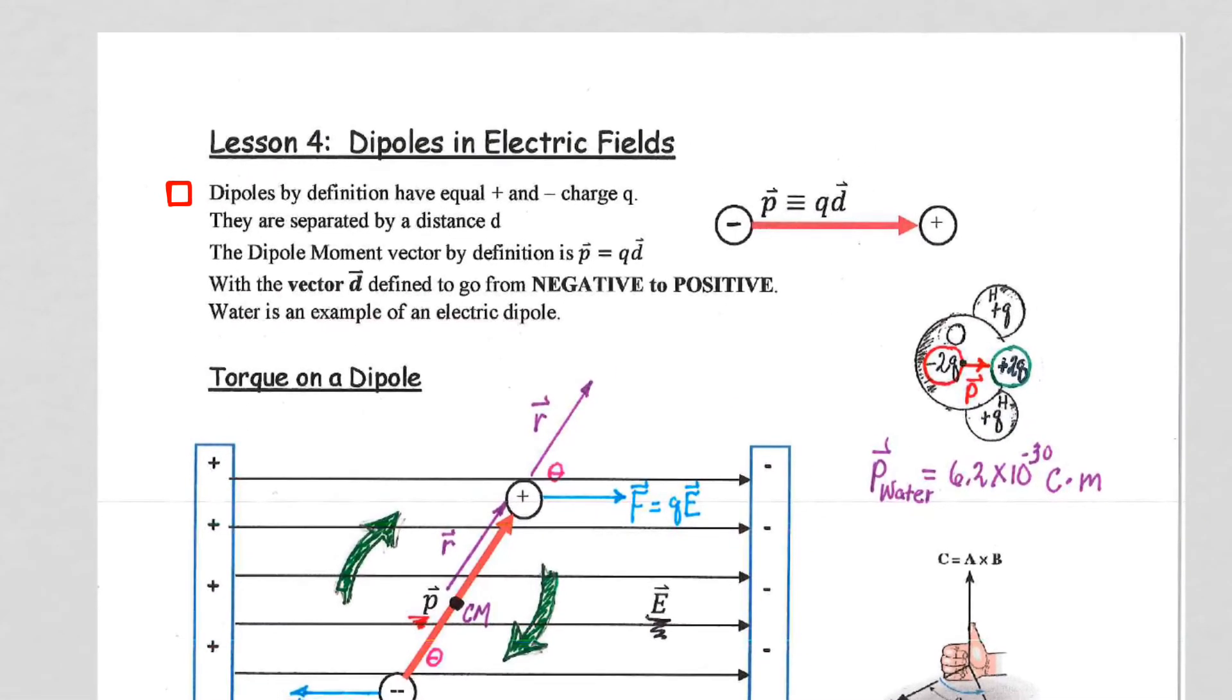They have equal positive and negative charges, meaning that if we had a polarized situation where, for example, this was negative 10 coulombs and we had a positive charge of plus 20 coulombs, that is not a dipole. That's polarization, but it is not a dipole.